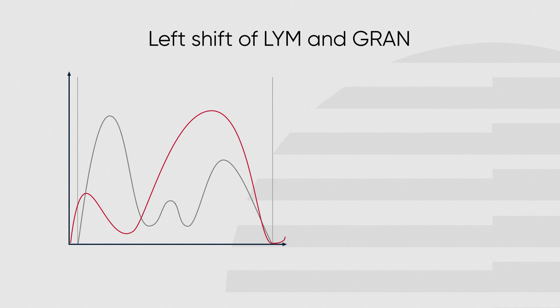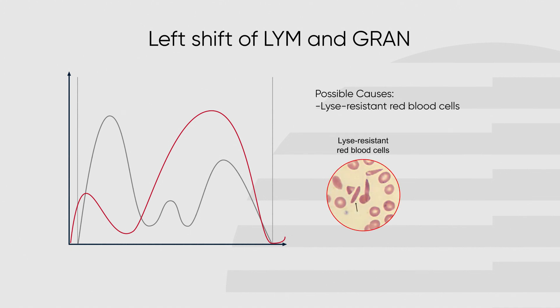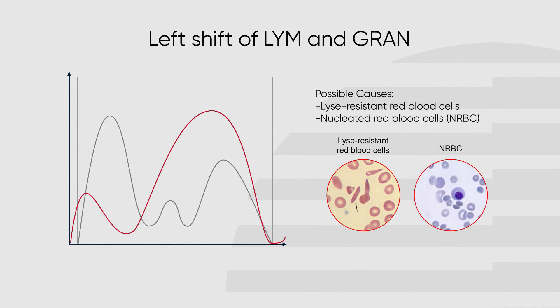A left shift of the lymphocyte and granulocyte populations may be caused by lysis-resistant red blood cells such as sickle cells or nucleated red blood cells. Unlysed cells or red blood cells with a nucleus are counted as lymphocytes, giving a false rise to the lymphocyte population. Since red blood cells are derived from the myelocyte stem cell — also the origin for granulocytes — an increase in nucleated red blood cells is often accompanied by an increase in immature granulocytes, causing the left shift of granulocytes in the histogram.